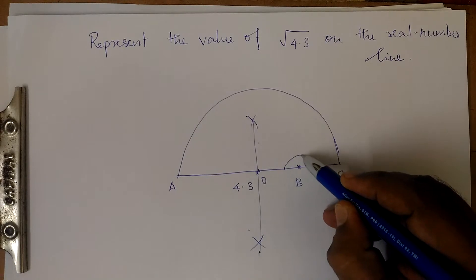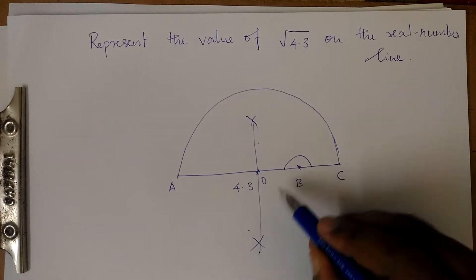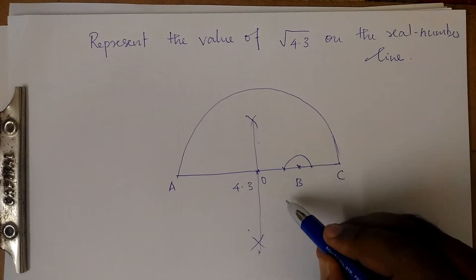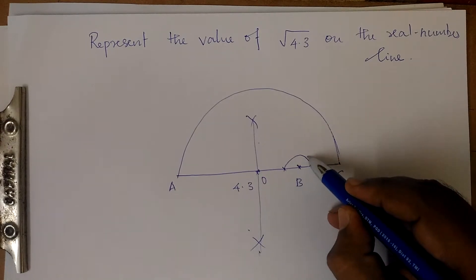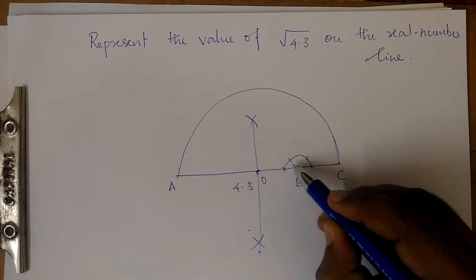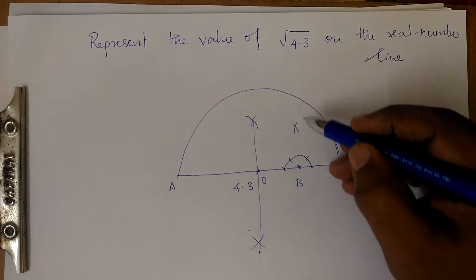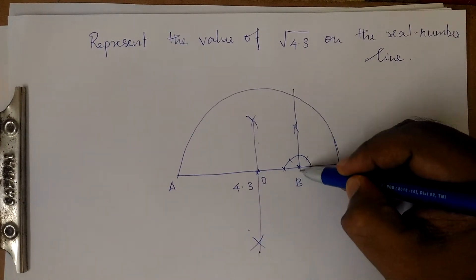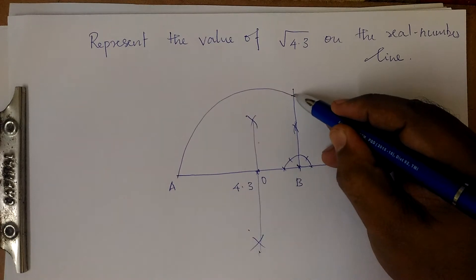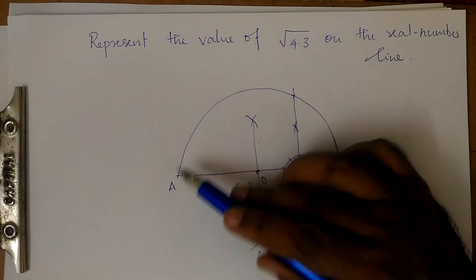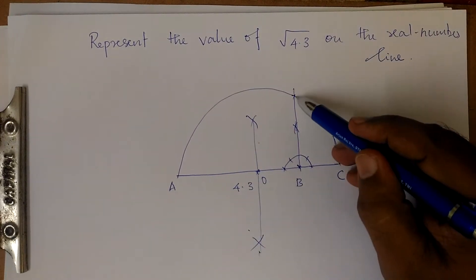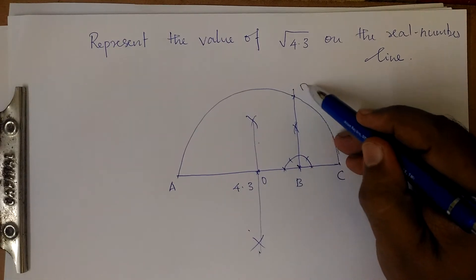Take a small radius and draw an arc which cuts on both sides. From these points, with the same distance, cut arcs. Connect these points, and it meets AC at a particular point. Let's call that point D.